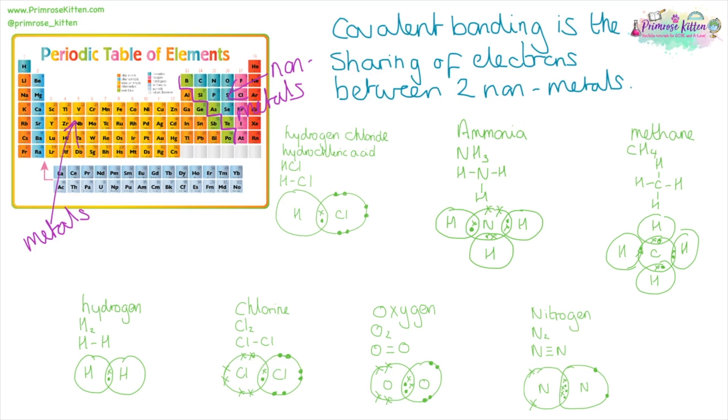Covalent bonding is the sharing of electrons between two nonmetals. These are the common ones you need to know how to draw. For each of these, you need to be able to give the name, the formula, be able to draw it with lines, and be able to draw the dot and cross diagram. Hydrochloric acid or hydrogen chloride: one element of hydrogen, one element of chlorine. Ammonia, NH3: nitrogen in the middle, three hydrogens coming off around the side. Methane, CH4: carbon in the middle, four hydrogens branching off it. Hydrogen, H2, very simple. Chlorine, halogens go around as diatomic molecules. Oxygen, we're getting a bit tricky now, has a double bond. Each line is equal to a pair of electrons. Here we have two lines, that is two pairs of electrons. We need four electrons being shared in the middle. And nitrogen has a triple bond: six electrons being shared in the middle.